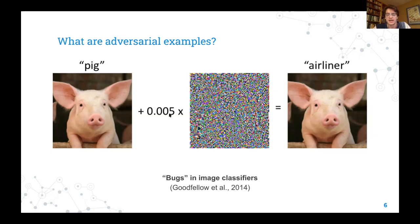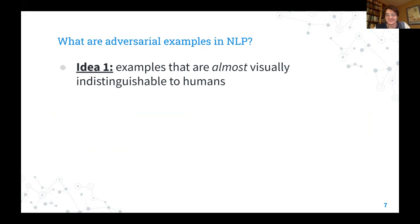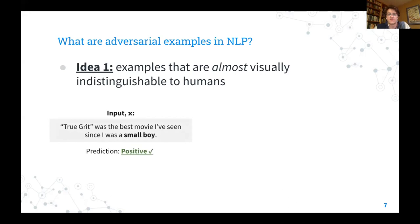There's no analogous example in text. You can't produce a sequence of text on the left and a sequence of text on the right that a human can't tell apart, unless those sequences of text are the same. One idea researchers have proposed is that adversarial examples in text are two sequences that are almost visually indistinguishable — maybe they differ by a few words or characters, and someone reading quickly can't tell the difference.